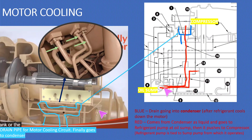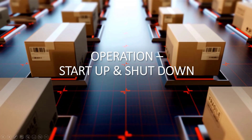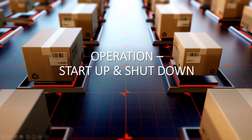For the motor cooling circuit, the cooling line finally goes to the condenser. The blue line indicates drain going to the condenser; after the refrigerant cools the motor, the red line comes from the condenser as liquid and goes to the refrigerant pump at the oil sump, which then pushes it to the compressor. The refrigerant pump is tied to the sump from which it operates.